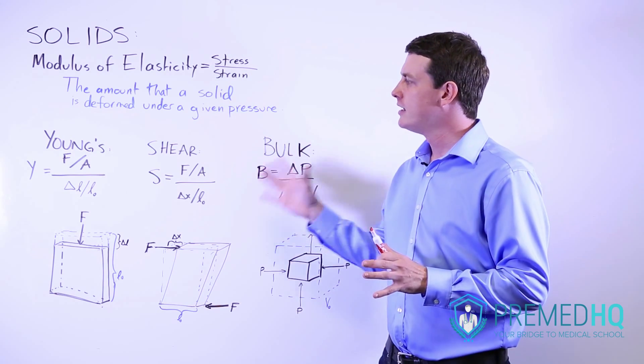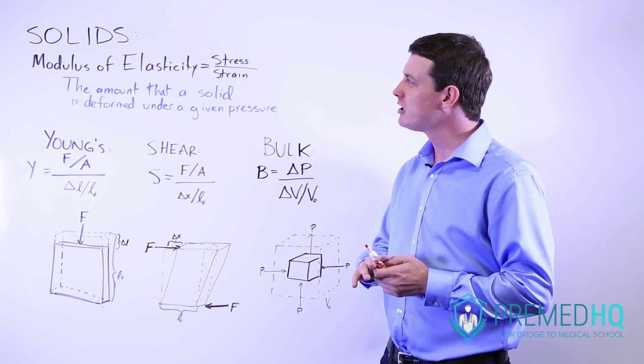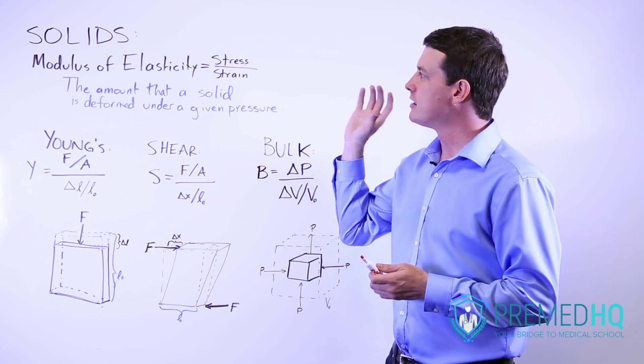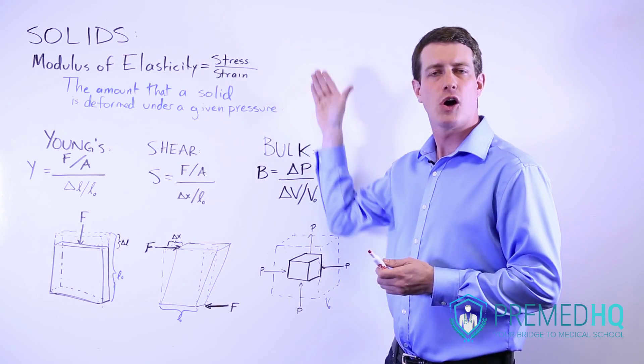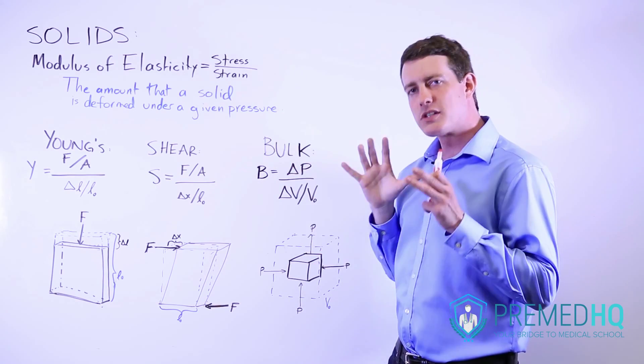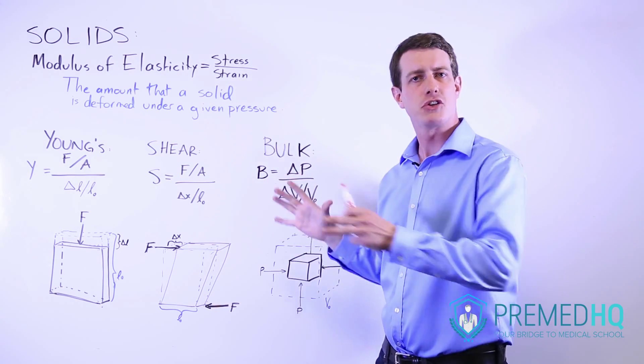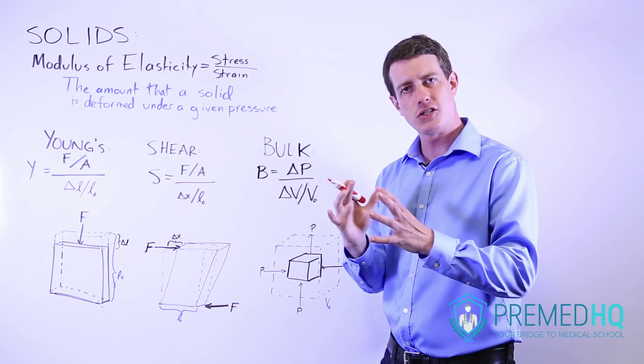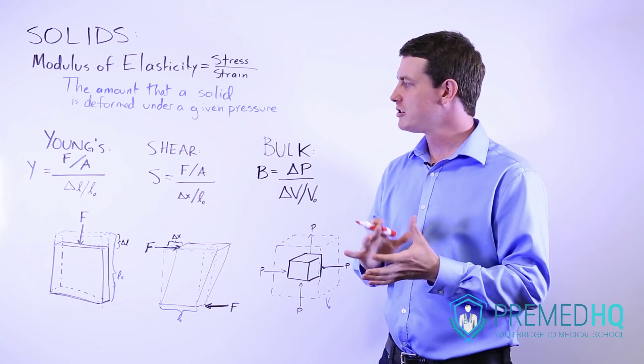There are three primary moduli of elasticity, all of which are defined by this general equation. The modulus equals the stress over the strain. So the stress is the force or pressure that is being applied and the strain is the amount that it changes relative to its original dimensions.